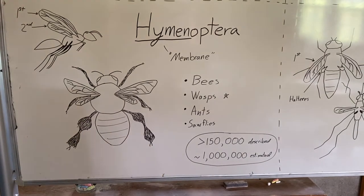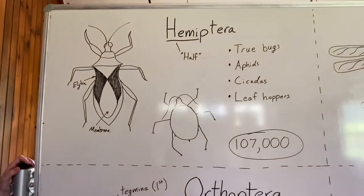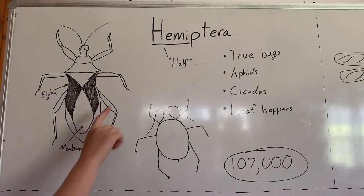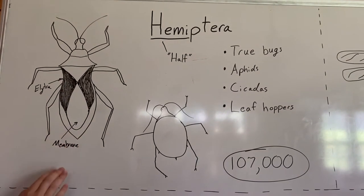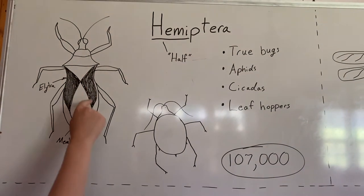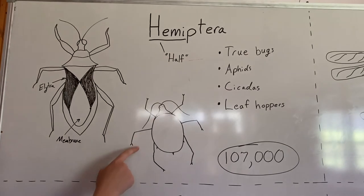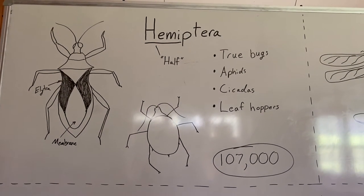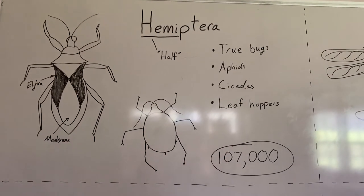Scientists estimate there are about one million Hymenoptera species worldwide. The next order is Hemiptera. Hemi means half, and this includes the true bugs, aphids, cicadas, and leafhoppers. They're described as half-wings because half of their first wing is elytra like the beetles, but the other half is membranous. This is where you often get a beautiful diamond pattern on things like stink bugs or assassin bugs. Their second wing is fully membranous, like wasps and bees. Most aphids you see probably won't have wings, as only certain generations do. There are about 107,000 species of hemipterans worldwide.